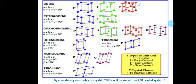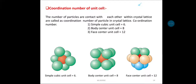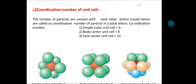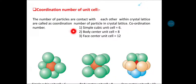In this lecture we will discuss the coordination number of the unit cell. We know there are different unit cells — primitive and non-primitive. The number of particles in contact with each other within the crystal lattice is called the coordination number. The coordination number for the simple cube is 6.